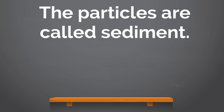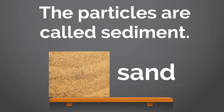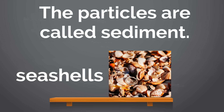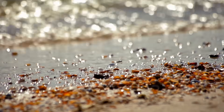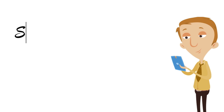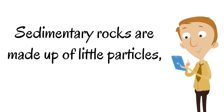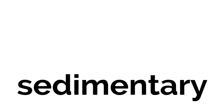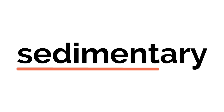Sediment. An example of sediment is sand — sand is a type of sediment. Seashells are an example of sediment as well. So there are lots of different types of sediment. They could come from non-living things like sand, or they could come from living things like seashells. Sedimentary rocks are made up of little particles called sediments, and you can even tell that from the name — sediment is in the name.